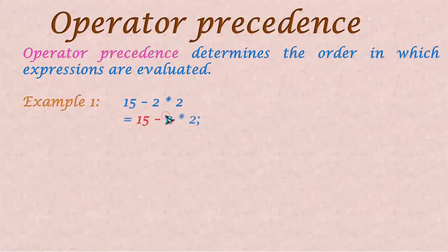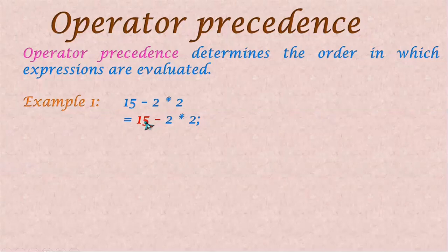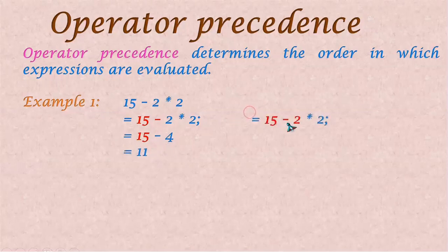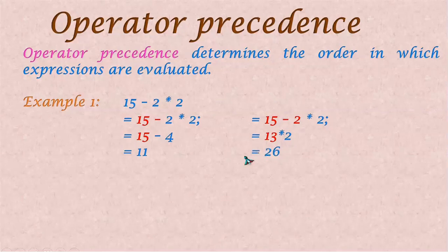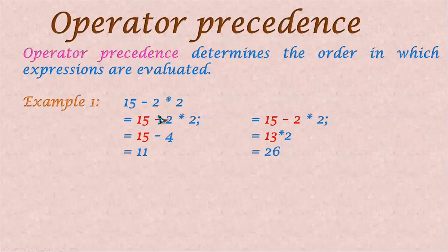If we consider the example 15 minus 2 into 2, we can evaluate it in two ways. One way: first evaluate 2 into 2 and then subtract from 15, giving us 15 minus 4 equals 11. The other way: do 15 minus 2 first, getting 13, then multiply by 2 to get 26. In this expression, multiplication has higher precedence, so we do it first, and subtraction has lower precedence, so it is done later. Therefore 11 is the right answer and 26 is wrong.